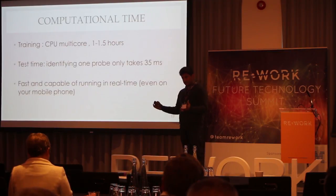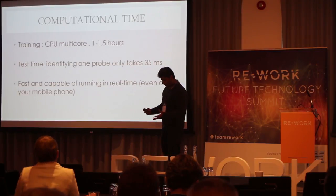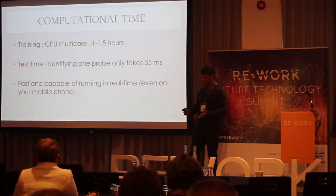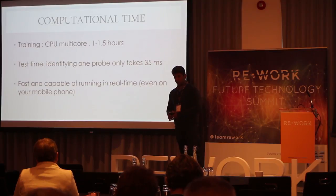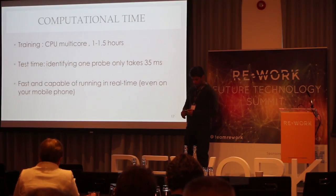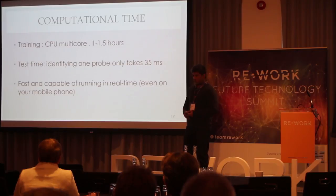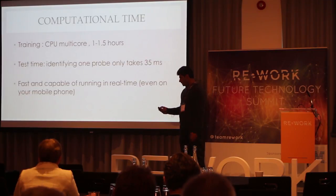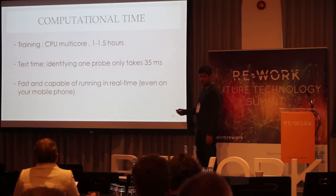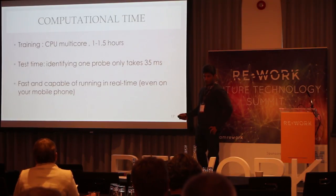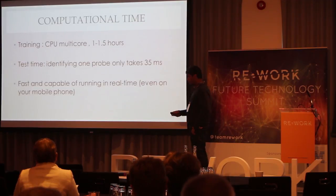The system is computationally very efficient because of our design steps. Training time for the model is about 1 to 1.5 hours on standard multi-core processors. Since we don't need to carry the models at test time, identifying one thermal test image and matching to find its identity only takes about 35 milliseconds. This means it's capable of running in real time — if you have cheap LWIR sensors in your mobile phone, you can even run it on standard mobile phones.